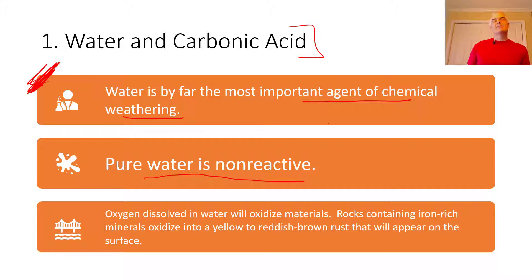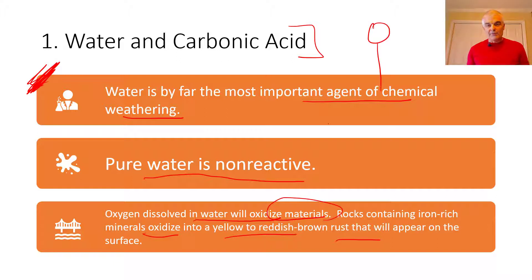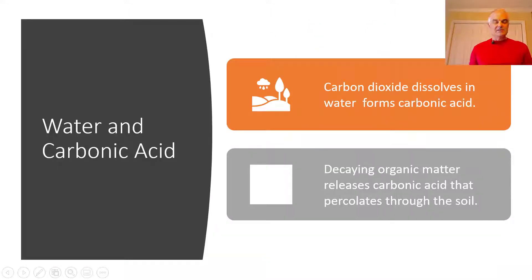Water is not pure on the earth. When there's oxygen dissolved in the water, it oxidizes materials — rocks and minerals. Rocks containing iron-rich minerals will then oxidize into yellow or reddish brown. If you get water with some oxygen — like a raindrop falling through the air — it picks up oxygen, and then all kinds of chemical reactions happen.